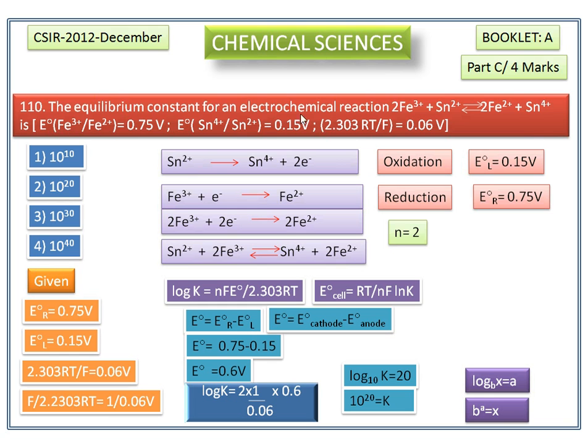So the equilibrium constant for this electrochemical reaction is 10 to the power of 20. The second option is the correct answer. Thank you.